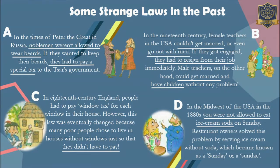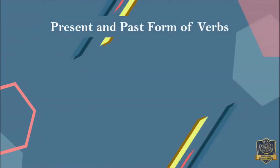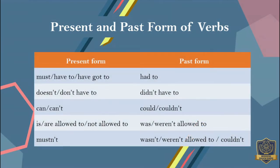Now we can move to the patterns — present and past forms of verbs. Do you still remember the present form of modal verbs? Now see the table. In present form, you have 'must', 'have to', 'have got to'. And in the past form, it becomes 'had to'. And 'doesn't' or 'don't have to' becomes 'didn't have to'.